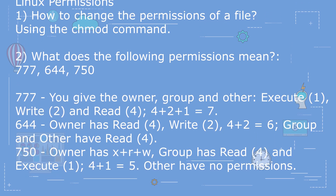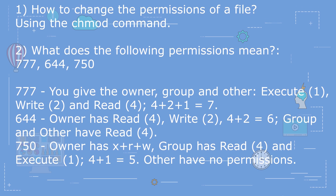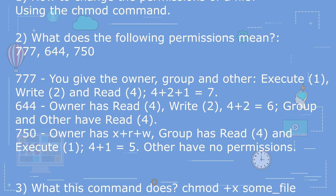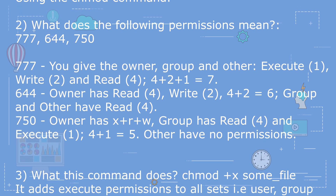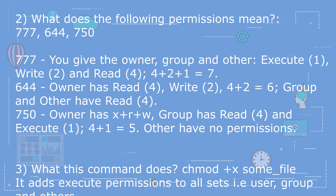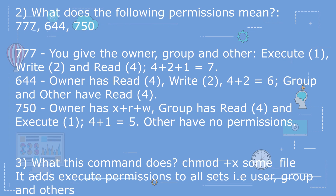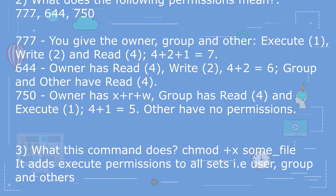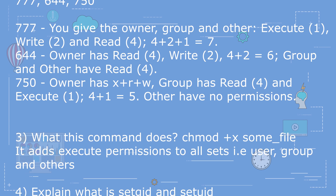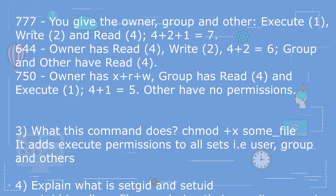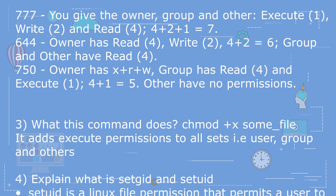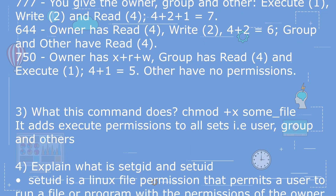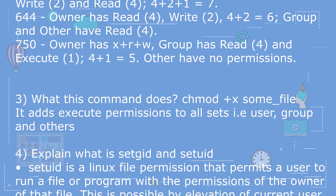For 644: owner has read (4) and write (2), so 4 plus 2 equals 6; group and others have read (4). For 750: owner has read, write, and execute (7); group has read (4) and execute (1), so 4 plus 1 equals 5; others have no permissions.